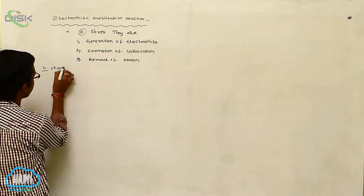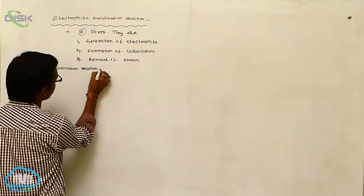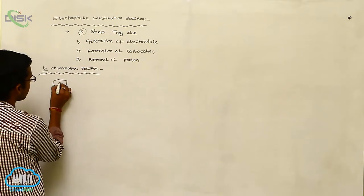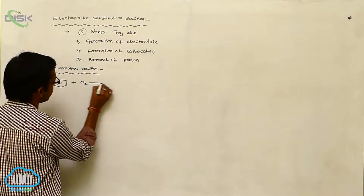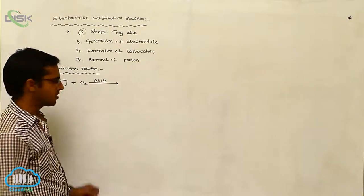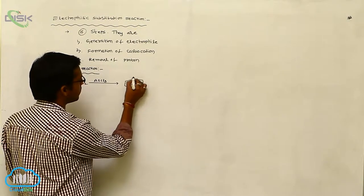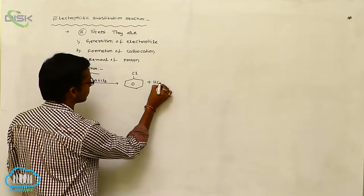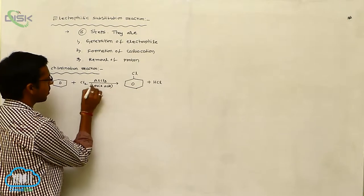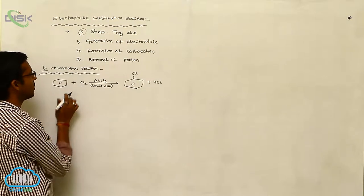One such reaction is Chlorination. If benzene undergoes chlorination in the presence of a Lewis acid like AlCl3, AuCl3, or FeCl3, it produces Chlorobenzene and HCl. This is called the chlorination reaction.